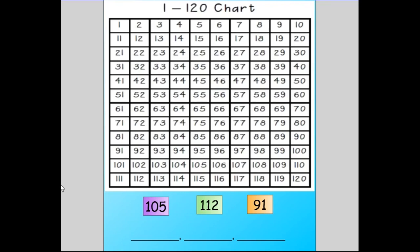If place value is a skill that you are still working on, you can also use your 120 chart to help you check your answer. The 120 chart is arranged from least to greatest. So you start with one, which is the least, and as you go down the 120 chart, you end up with the largest value, which is 120.